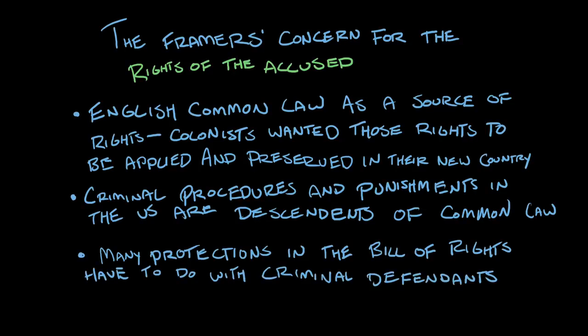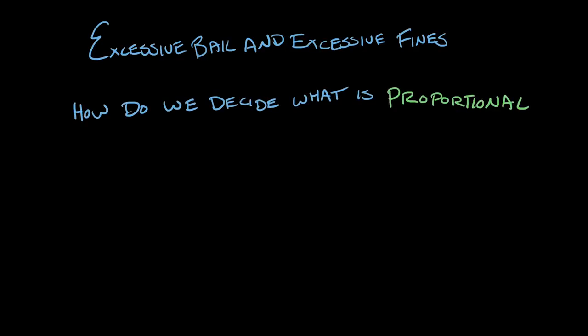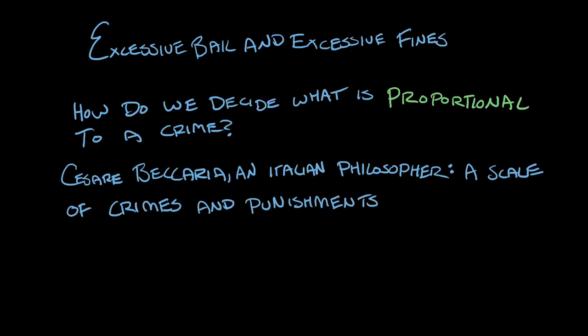What about excessive bail and excessive fines? How can we define what kind of financial penalty is proportionate to a crime? The courts have looked at dictionary definitions — excessive means more than is necessary. One of the core principles goes back to Beccaria's work in the 1760s. He talked about this idea of a scale of crimes and a scale of punishments, and said that there should be proportionality between the two. That proportionality principle is one that we're still wrestling with today.